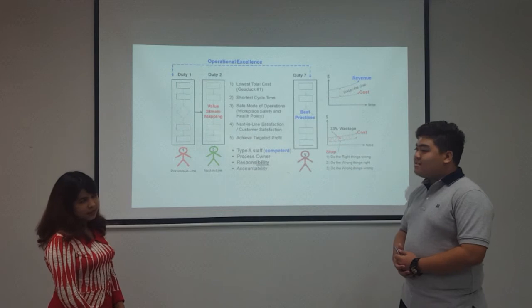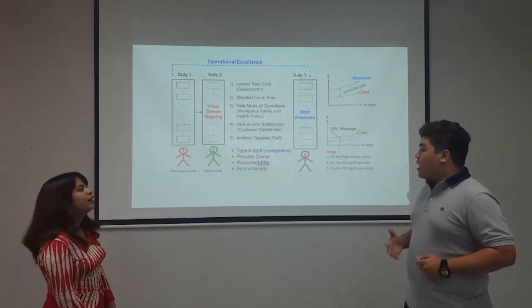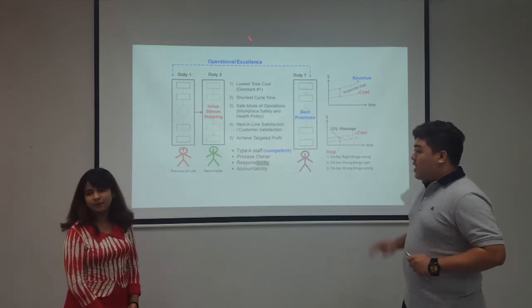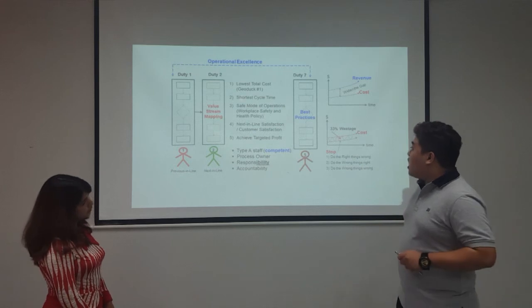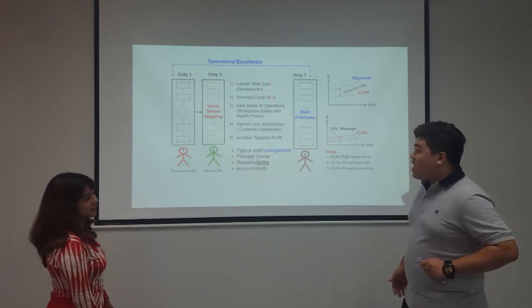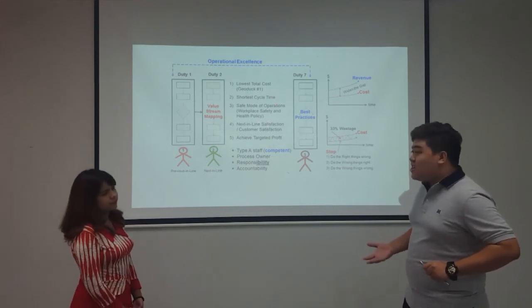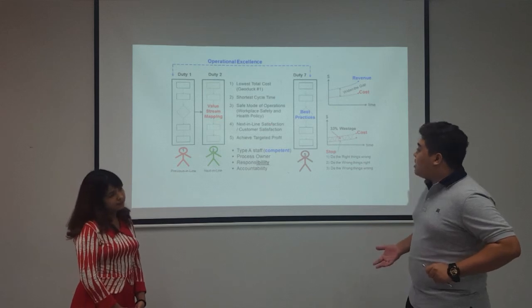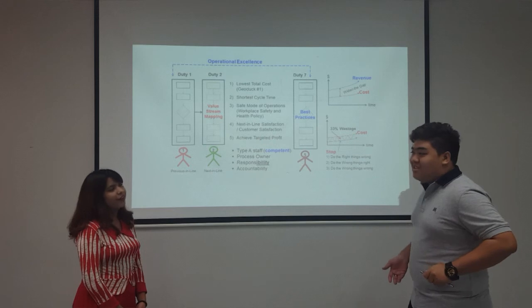Okay, so what things do you want to achieve by using lean manufacturing? Yes, everyone should know that they want to achieve five things every day. So the first thing is the lowest cost, the second thing is the shortest cycle time, the third thing is safer operations, then next in line satisfaction, also customer satisfaction, and then achieve the targeted profit.